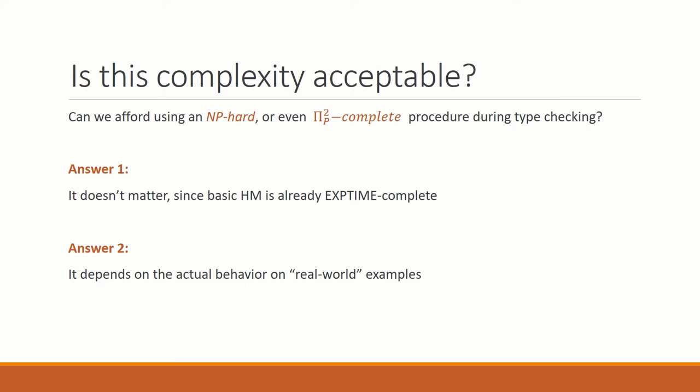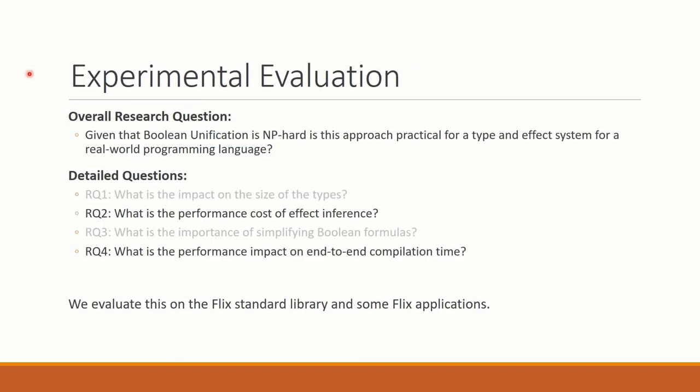We have implemented our system in the Flix programming language. Flix is a functional imperative and logic programming language that has many of the common features of ML-style languages. Now, in the context of this work, the overall empirical research question is that given boolean unification is NP-hard, is it actually practical to have a type and effect system where we need to solve such problems during type inference?